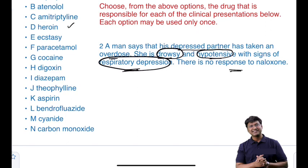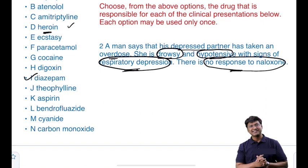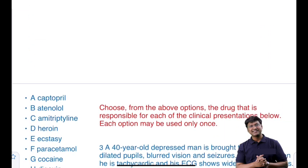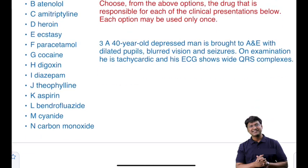The answer is diazepam. If it were heroin overdose, the patient would show a response to naloxone. No response to naloxone means it is not a heroin overdose. The third clinical scenario: a 40-year-old depressed man is brought to accident and emergency with dilated pupils, blurred vision, and seizures.